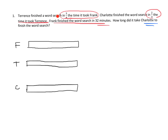Going back to read: Terence finished in three-quarters of the time it took Frank. So we chop Frank's bar into four pieces — the fourth piece is not needed because Terence did it in three-fourths of Frank's time. Then Charlotte did it in two-thirds of the time it took Terence.